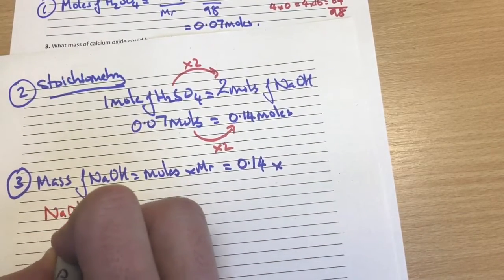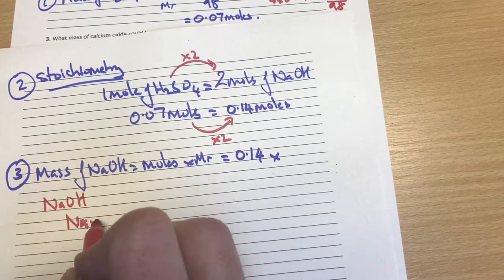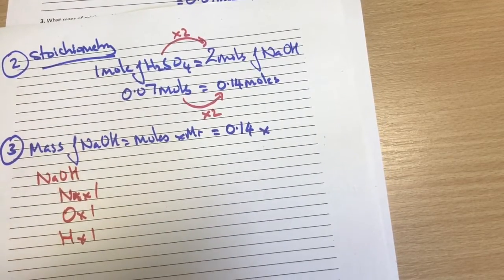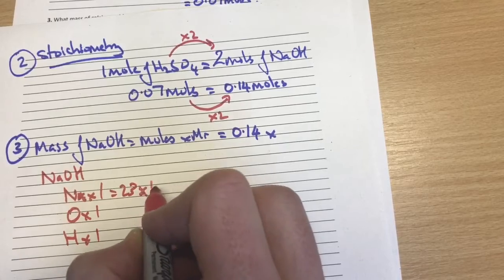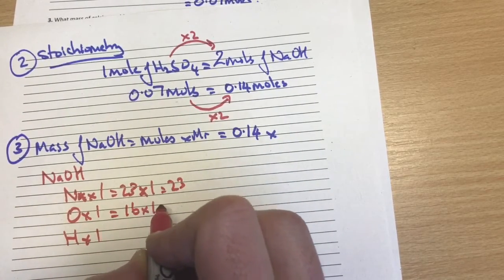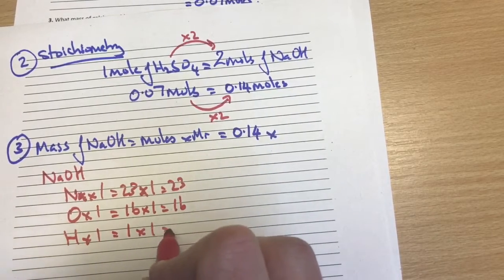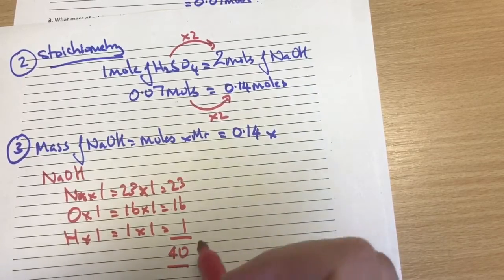So we're dealing with sodium hydroxide. This means there is one sodium, one oxygen, and one hydrogen. Putting some masses into that is 23 times one is 23. The mass of oxygen is 16, so that's 16 times one. And the mass of hydrogen is one times one is one. Add those up. That gives me a total mass of 40.